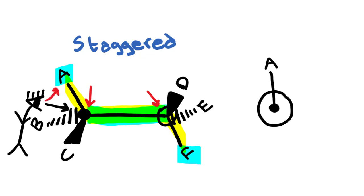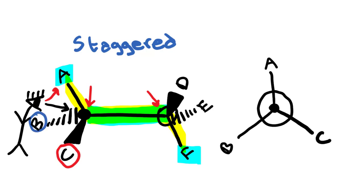Wedges are coming out of the screen toward us, so from cyclops man's perspective, in order to look at letter C, he is going to look down and to his right. So letter C would be down and to the right. In order for him to look at letter B, which is on a dash — meaning it's going behind the screen away from us — he would have to reach down and to his left behind the computer screen. So letter B is going to be down and to the left from his perspective.